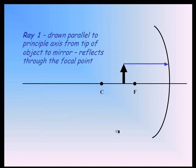The first line is we draw parallel to the principal axis from the tip of the object to the mirror. It always reflects through the focal point. So there's our first ray, and we'll join all these three rays up after.